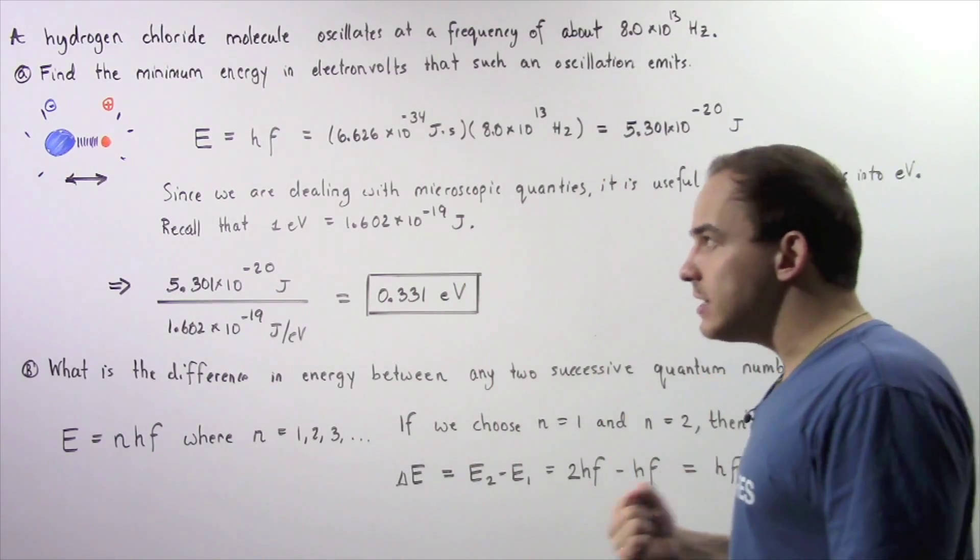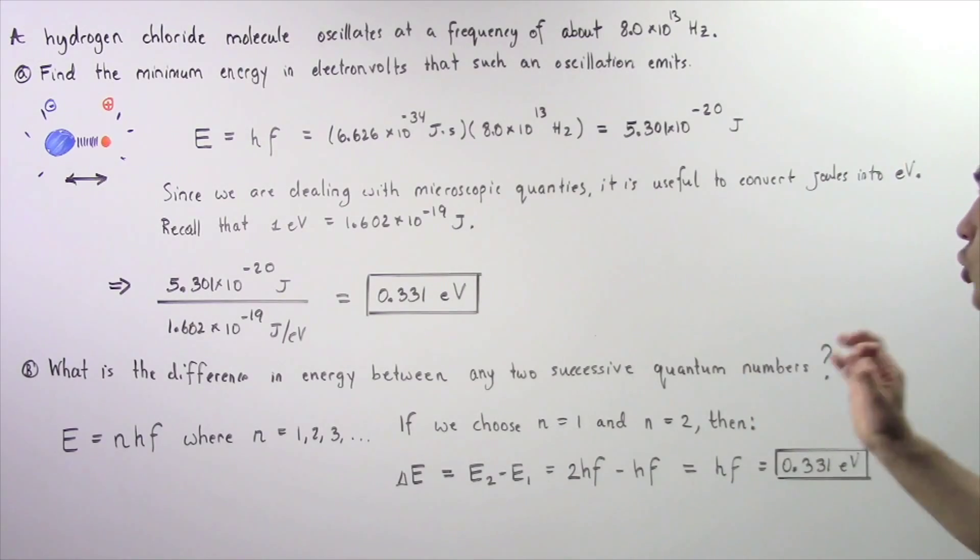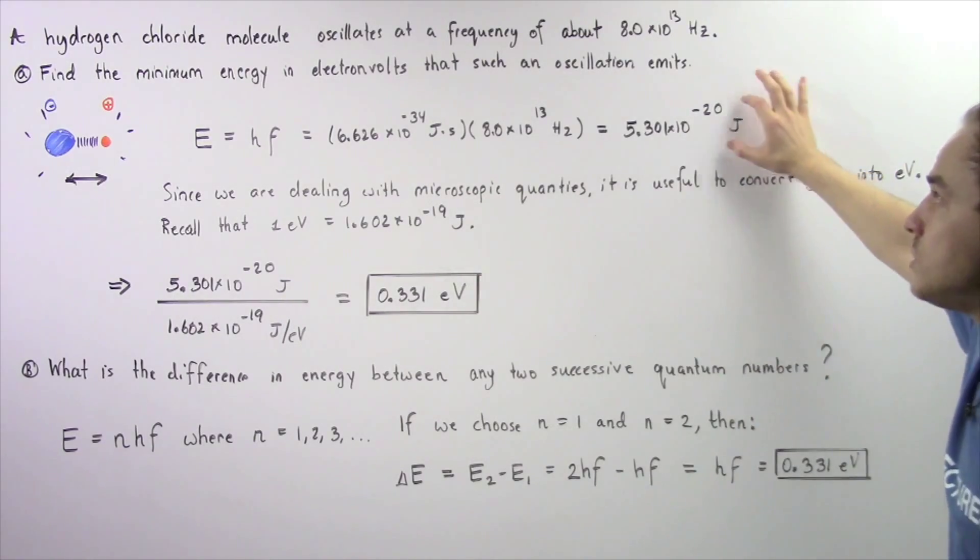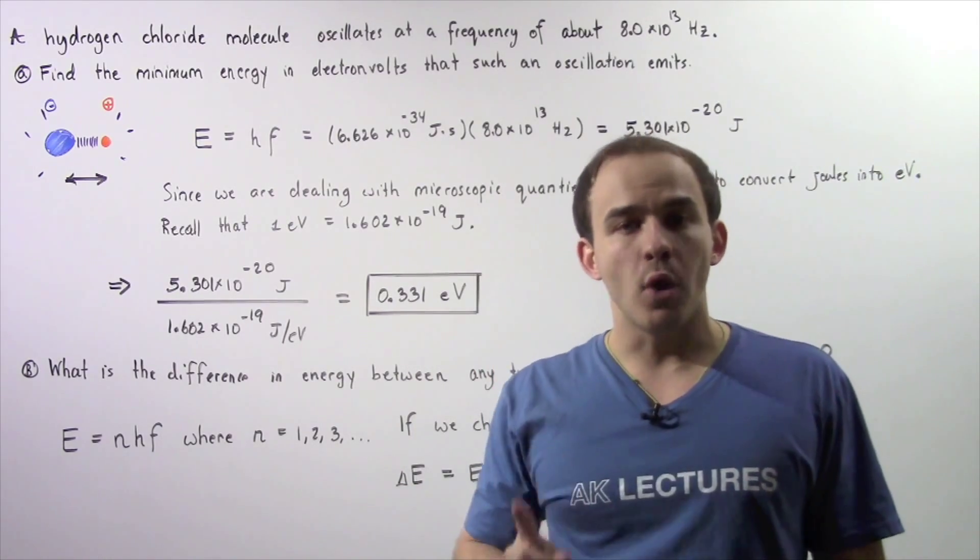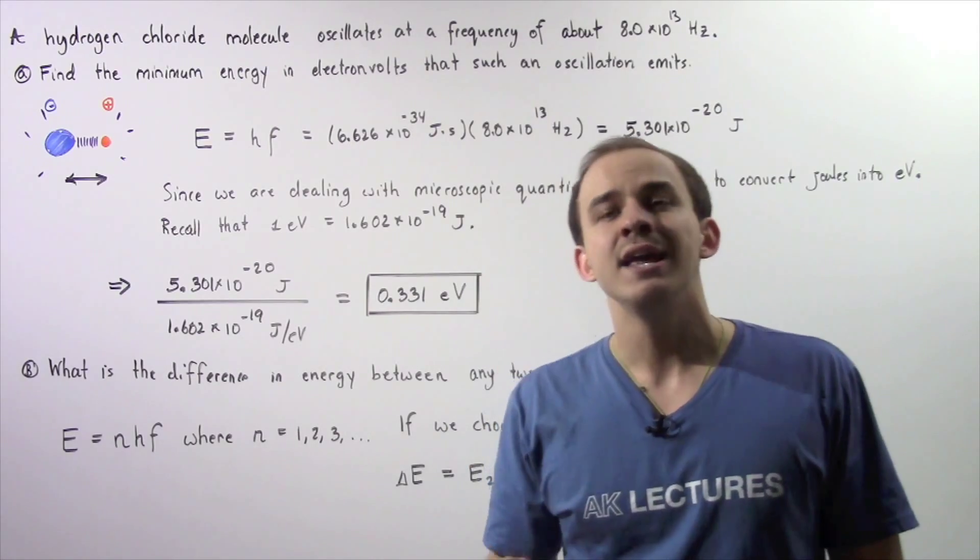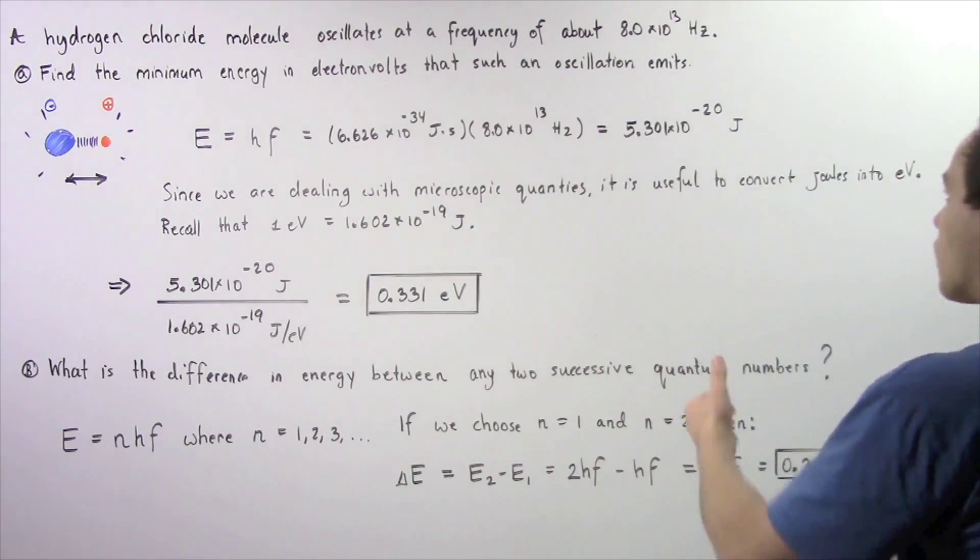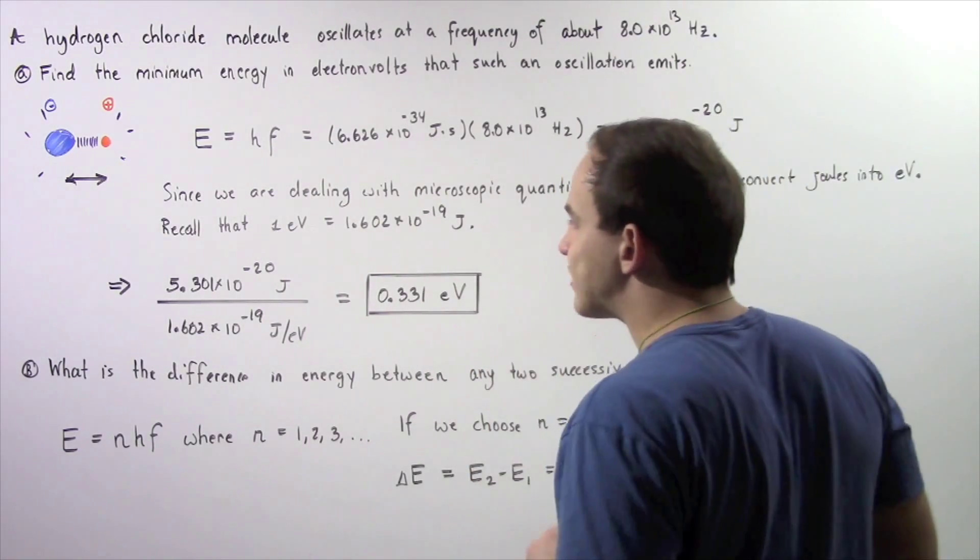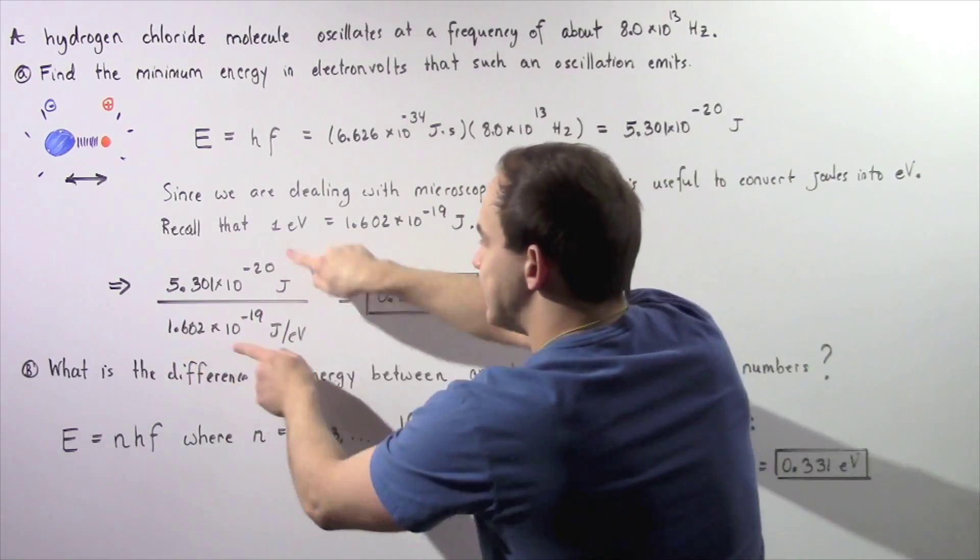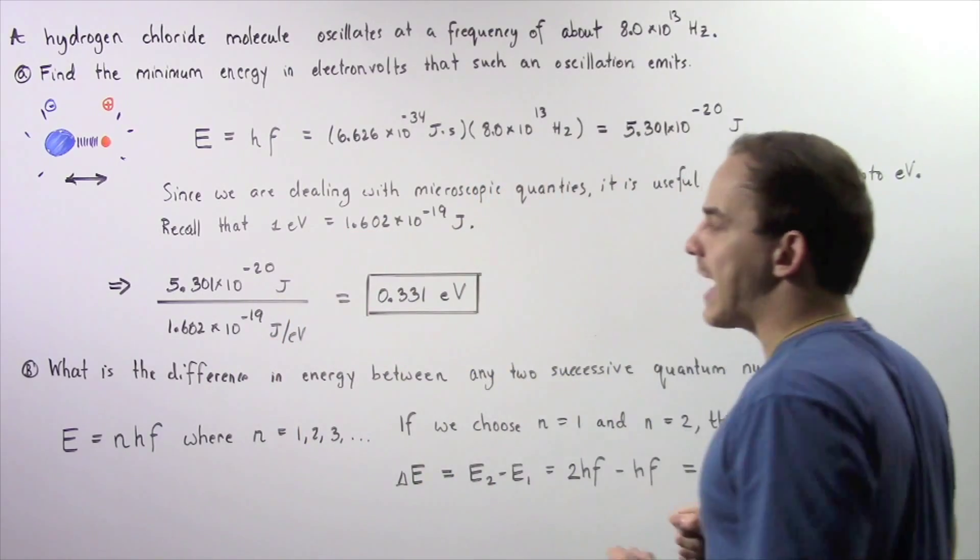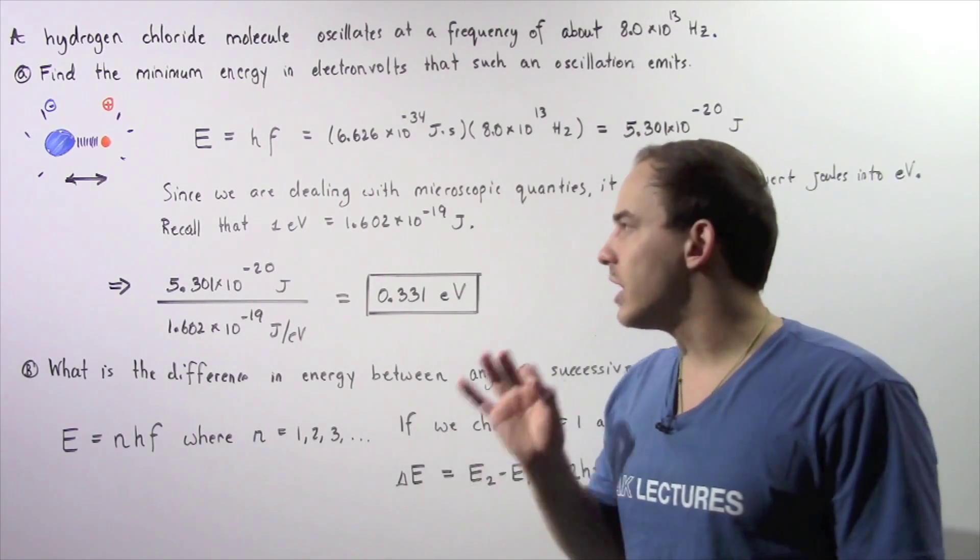Now because we're dealing with the subatomic level, with the microscopic level, it is useful to convert from joules into electron volts. Recall that 1 electron volt is equal to 1.602 x 10^-19 joules. So using this conversion, we can convert from joules into electron volts by taking this quantity and dividing it by this quantity, as shown in the following calculation. And this is equal to about 0.331 electron volts.